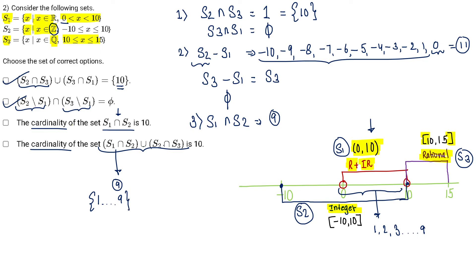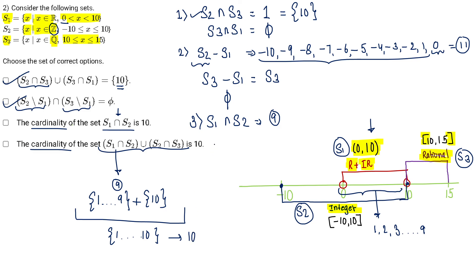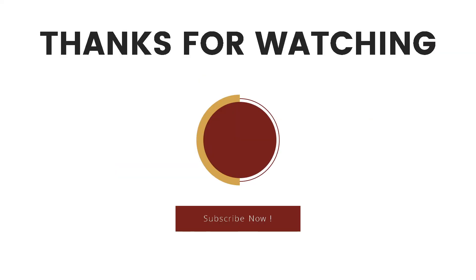Now let's find S2 intersection S3. The one element in both S2 and S3 is only 10, so it has only the value 10. That is what is written in option D. So the correct answers to this question are option A, B, and D. If you learned anything new in this video, don't forget to subscribe to support us.